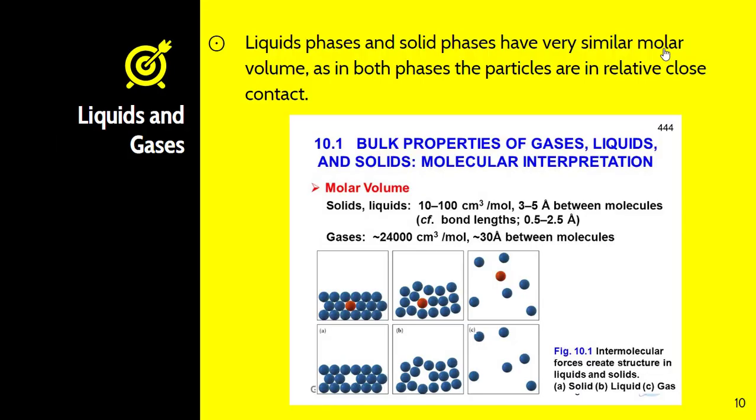Liquid phases and solid phases have very similar molar volumes as in both phases the particles are relatively close in contact. They have very similar intermolecular forces and as a result take up a similar amount of space. They have very similar molar volumes because the space between molecules in solids and liquids is pretty much the same.